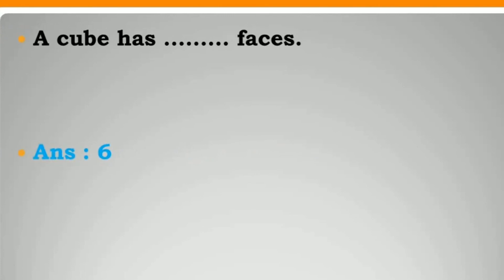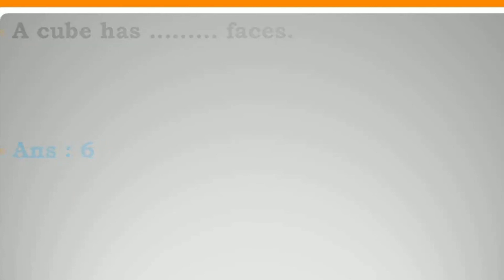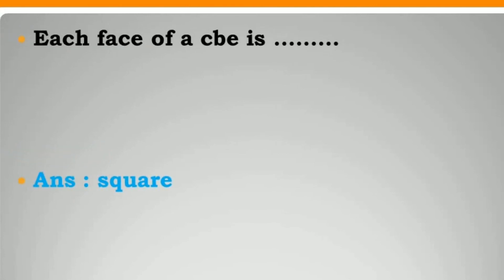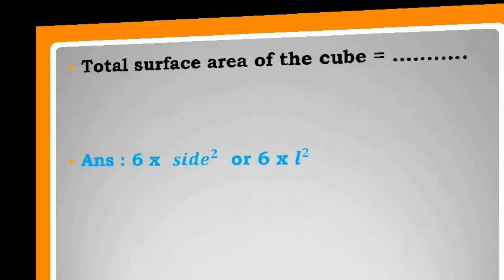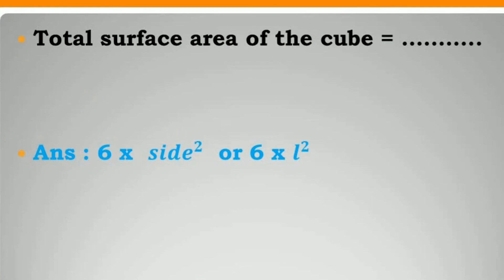A cube has 6 faces. Each face of a cube is square. Total surface area of cube is equal to 6 into side square, or 6 into length square.